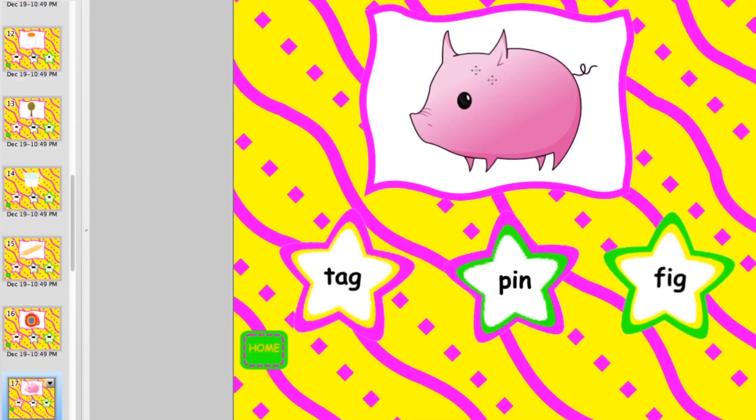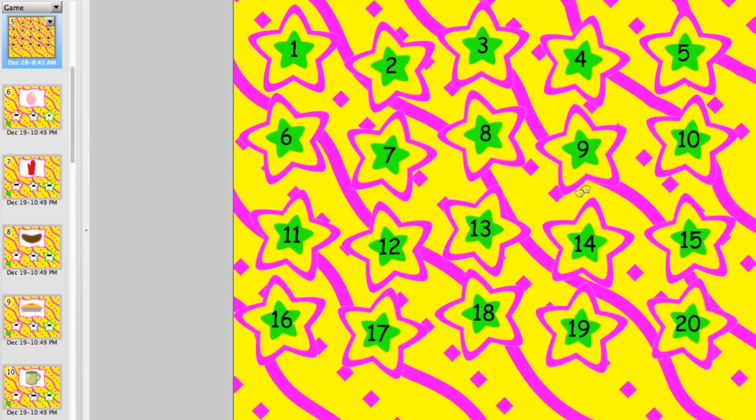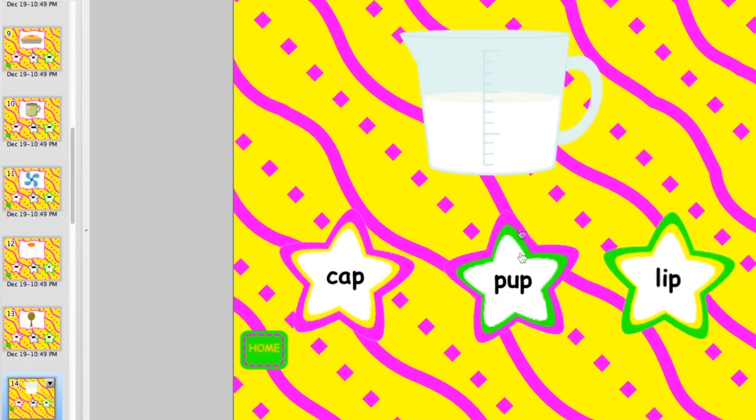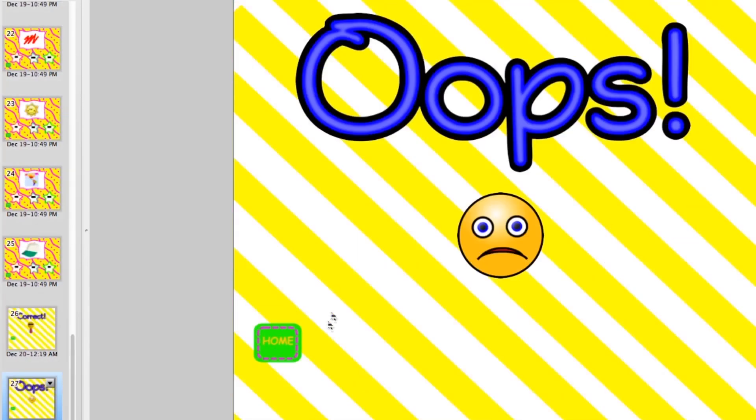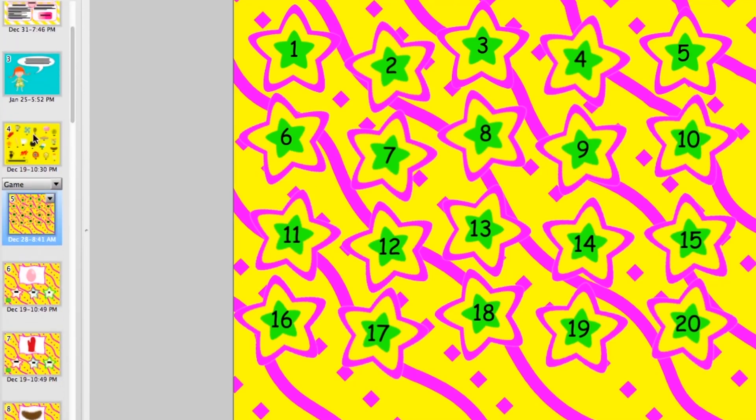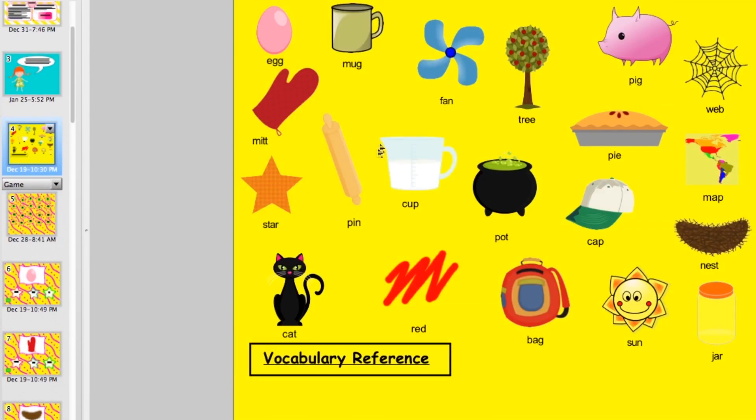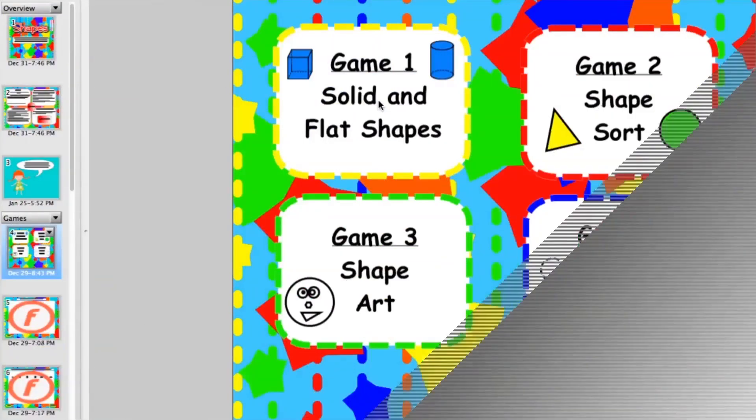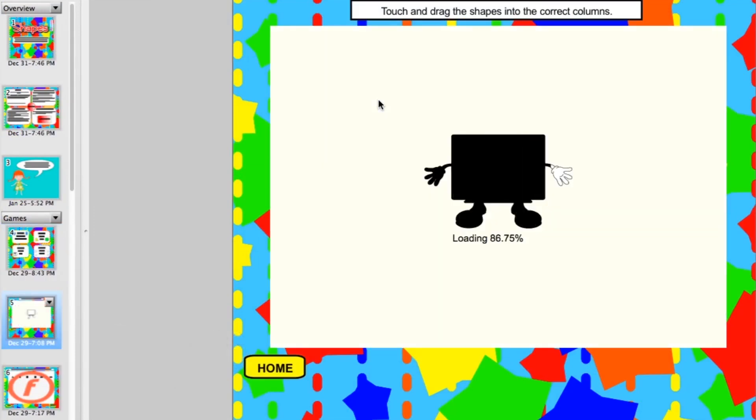In this rhyming stars game, students will look at the picture and find a star that rhymes with the picture shown. If they're correct a correct image will appear. If they're incorrect then an oops page will appear. There's also a word vocabulary page to help with the names of the pictures.